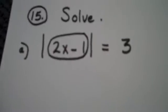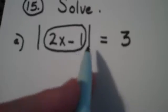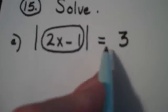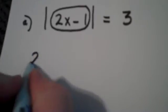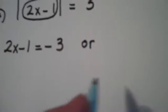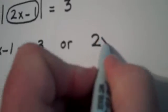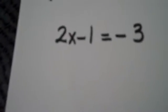If 2x minus 1 is located at a distance of exactly 3 blocks from 0, that means that 2x minus 1 is sitting on top of the number negative 3. Or, it could mean that 2x minus 1 is sitting on top of the number positive 3. So we have two possibilities.